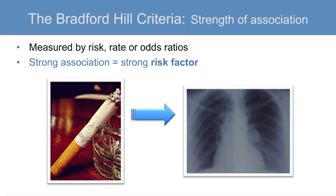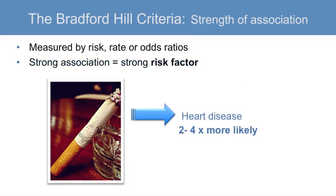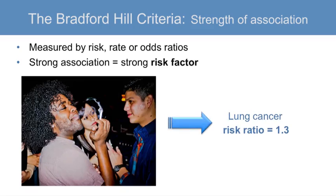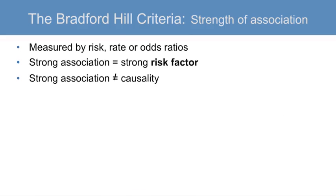There are certainly examples of weak but causal associations, such as smoking and heart disease, where smokers are 2 to 4 times more likely to develop heart disease than non-smokers. In the case of heart disease, there are a number of other risk factors, including diet, sedentary lifestyle, and genetic predisposition, that are as strong or stronger than smoking. Another weak but causal association is exposure to environmental tobacco smoke, which has a risk ratio for lung cancer of 1.2. One should not assume that a strong association alone is indicative of causality, as the presence of strong confounding may erroneously lead to a strong causal association.